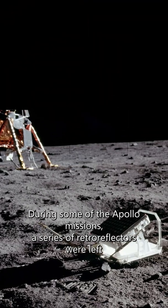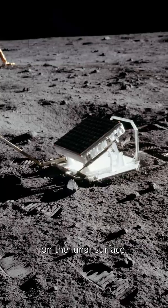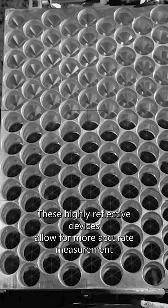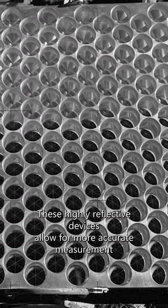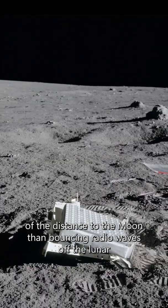During some of the Apollo missions, a series of retro-reflectors were left on the lunar surface. These highly reflective devices allow for more accurate measurement of the distance to the Moon than bouncing radio waves off the lunar surface.